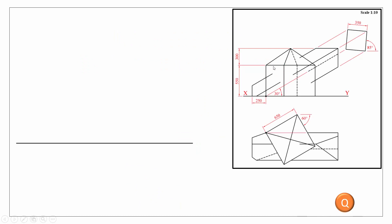Here we have the graphical part of the question giving us all our dimensions and the setup of two solids. We have one solid which is a square prism with a little point at the top, and our second solid is an inclined square-based prism which is going to cut through it. From the dimensions given, we have a scale of 1 to 10. Using an angle of 60 degrees and a length of 65 millimeters, we're able to draw in our square on the sheet.